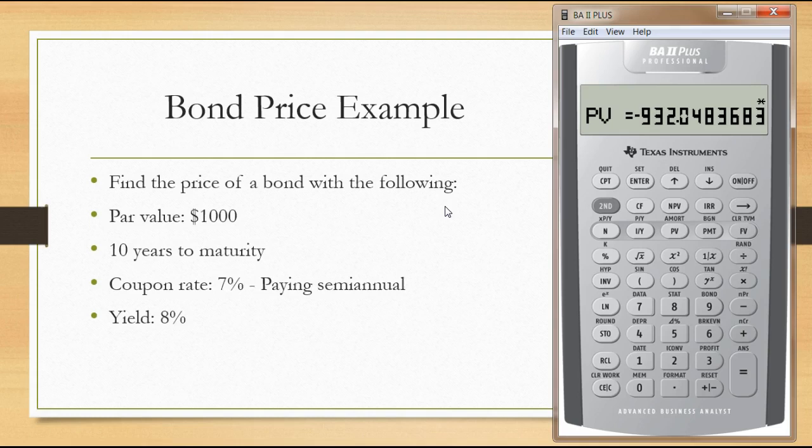There is a second method that we can follow, a little bit more complicated, but I'll walk you through it. We're going to use the bond function and some of these inputs. To get to those bond functions, press second bond, and now you'll see it's called SDT.